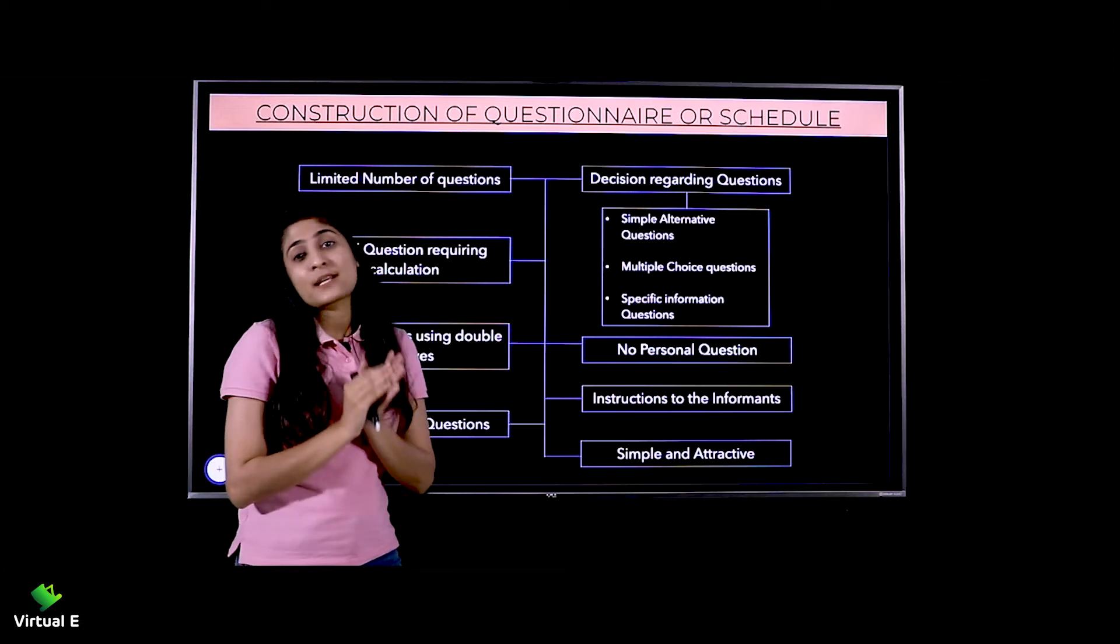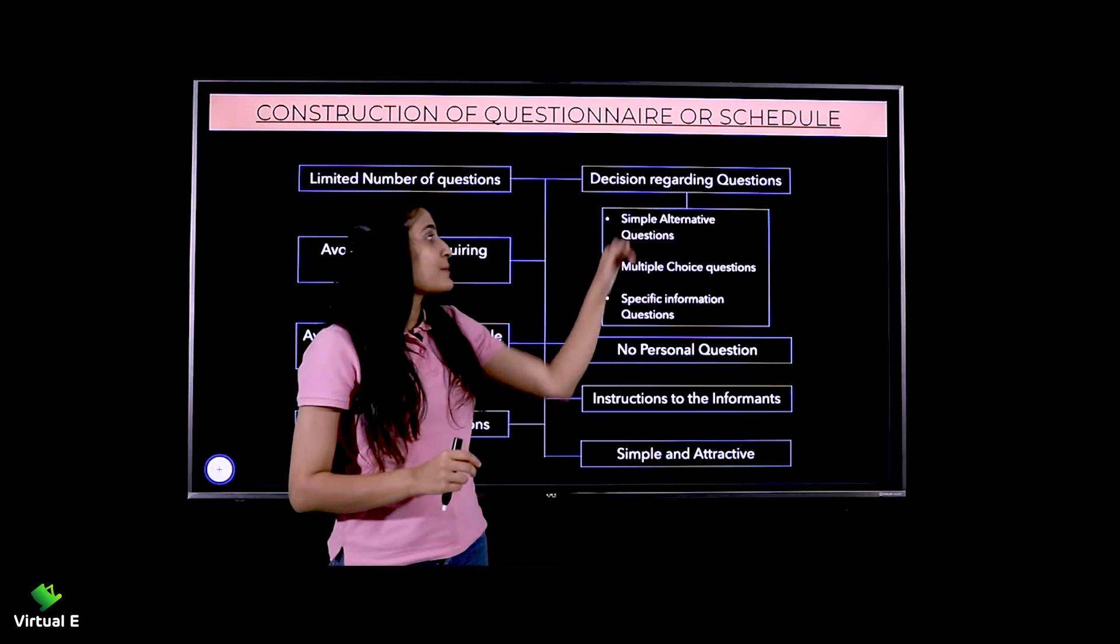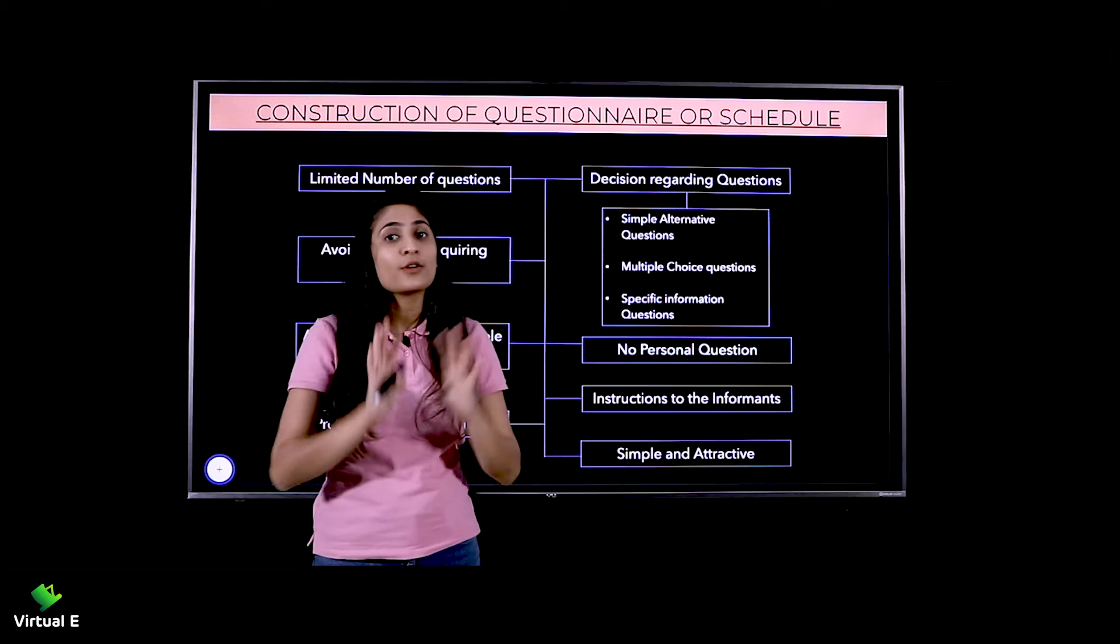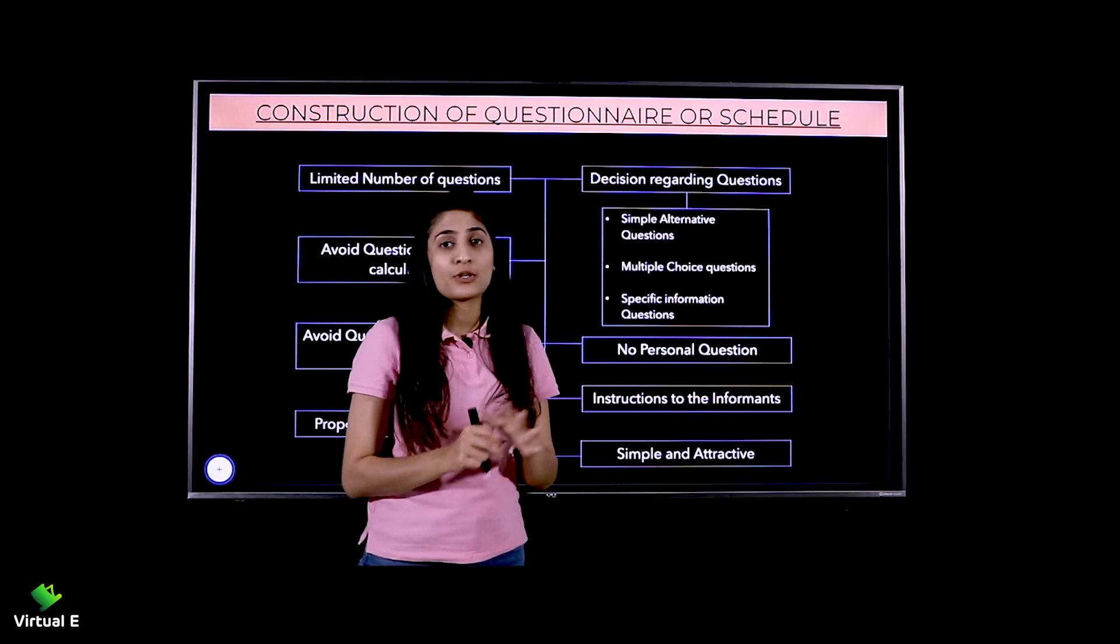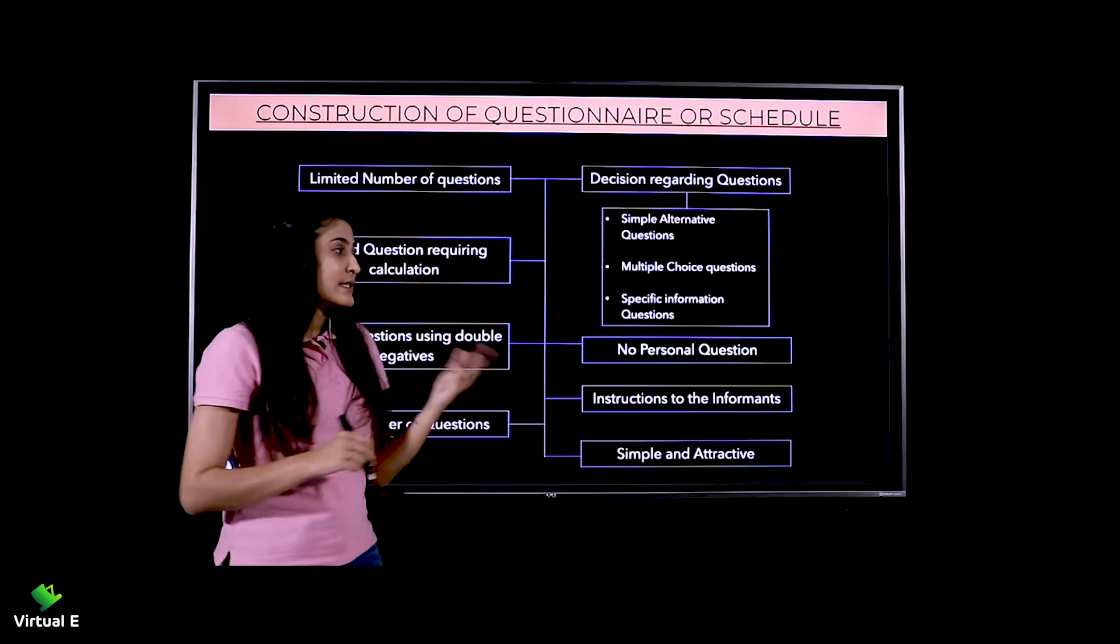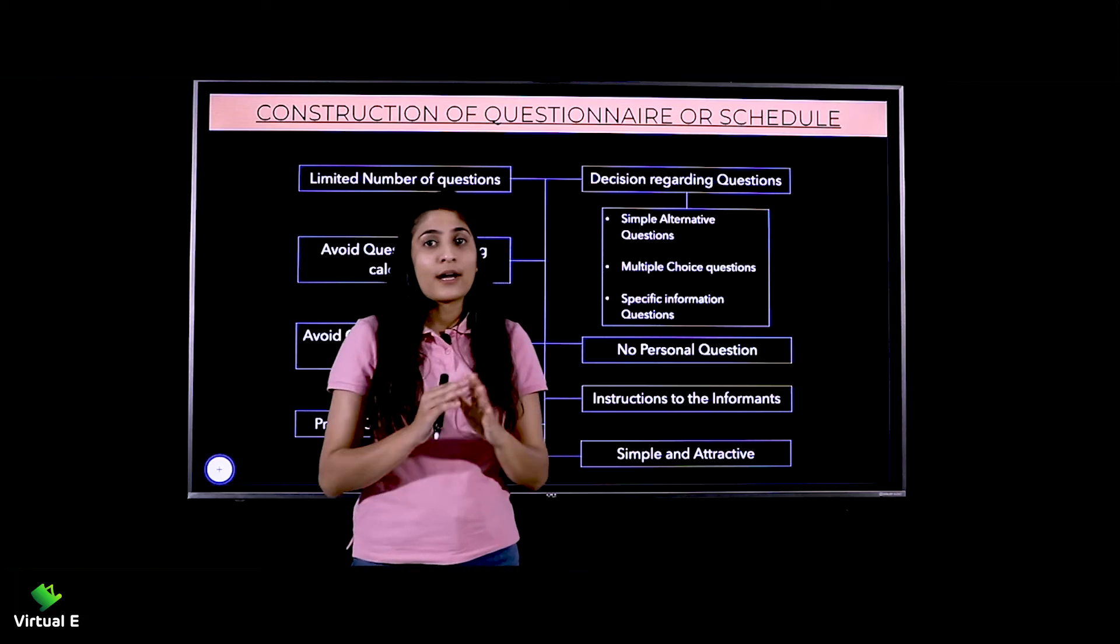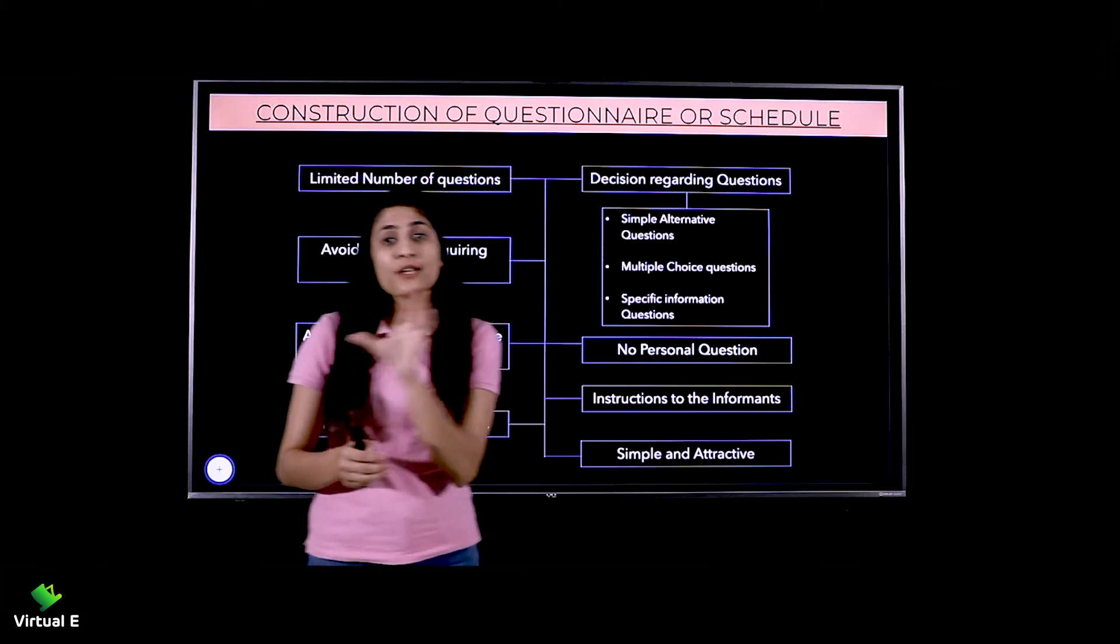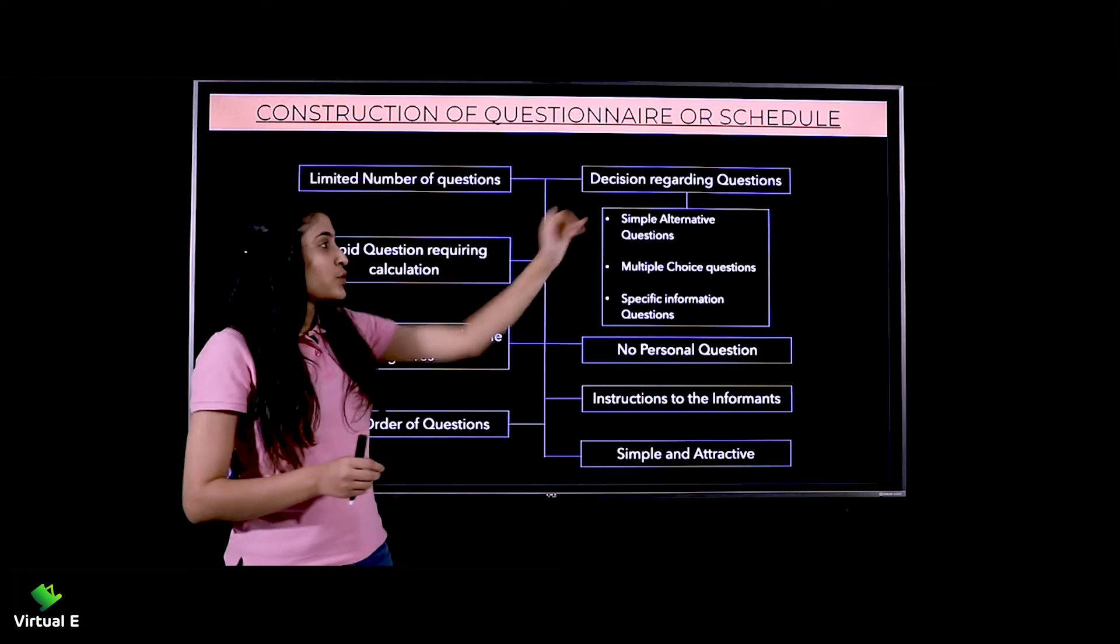You need to decide which type of questions to include. It can be simple alternative questions like yes or no. The next is multiple choice questions with four options - MCQs. The next is specific information questions like 'Are you married?', 'How many members in your family?', or 'How many hours do you work?'. These are specific information questions when you need to collect particular data.